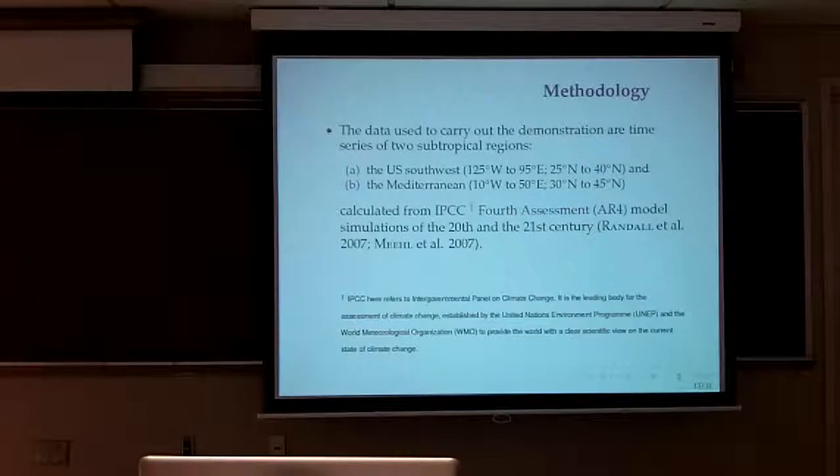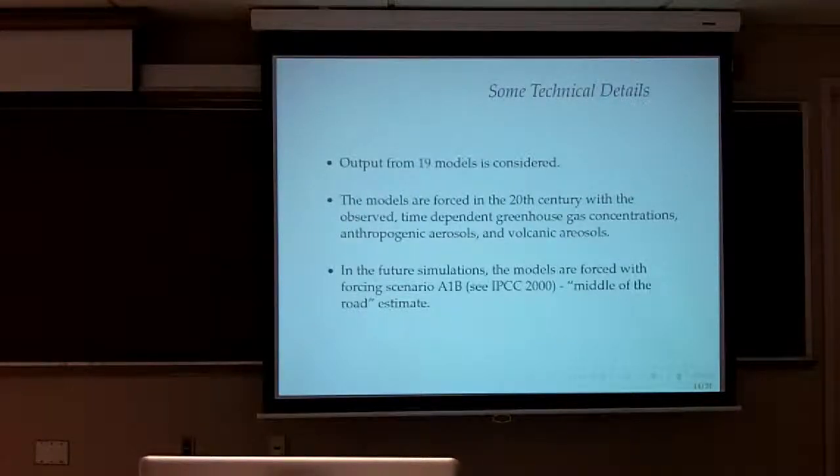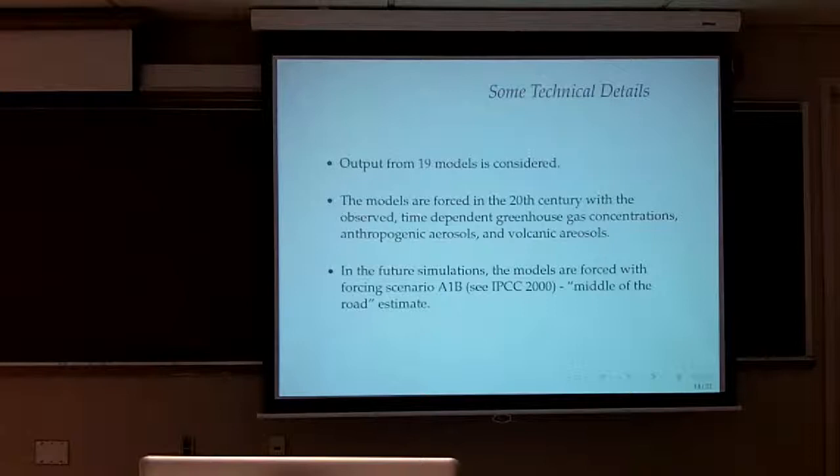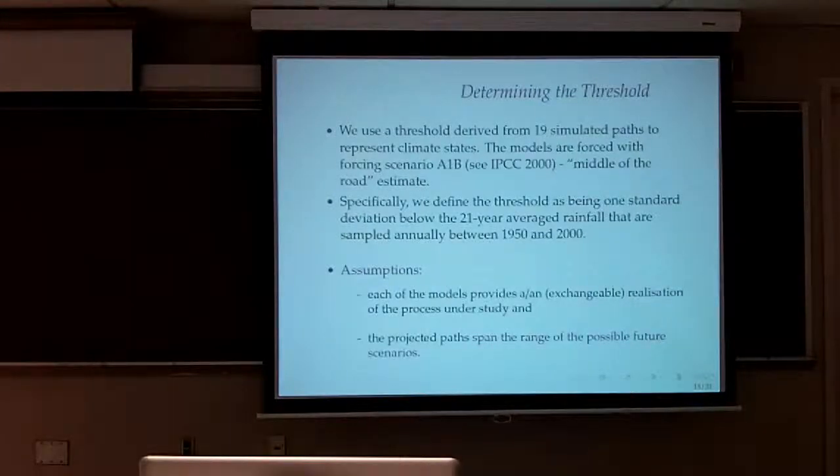Some of this data is out there in science. In this study, we had 19 models that were used to predict the drought, the amount of water that came up in both the southwest and in the Mediterranean. So there were 19 models that were used. These are some of the specifications. The models are forced in the 20th century with observed land-dependent greenhouse gas concentrations, anthropogenic aerosols and volcanic aerosols. And then in the future simulations, the models are forced with forcing scenario A1B, middle-of-the-road estimate.